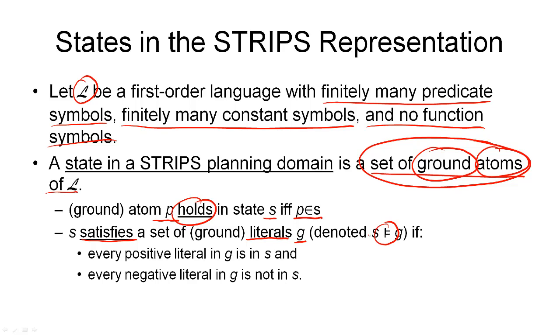And this is simply the symbol we use to denote that S satisfies G. And we consider this the case, if every positive literal in G is also in S. So, every positive literal in G holds in S. And every negative literal in G does not hold in S. So, it's not an element of S.